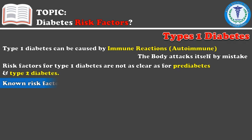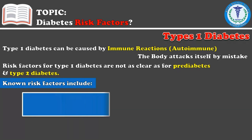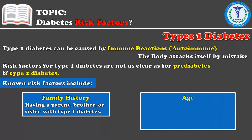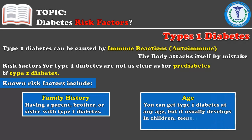Among the so far proven risk factors is family history. If any of your parents, brothers or sisters have type 1 diabetes, then the risk of developing it increases. You can have type 1 diabetes at any age, but it mostly happens to children, teenagers and middle-aged people.